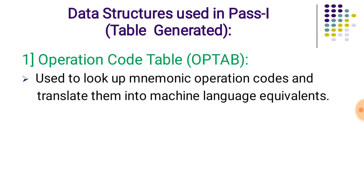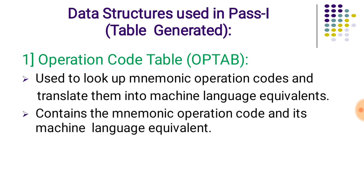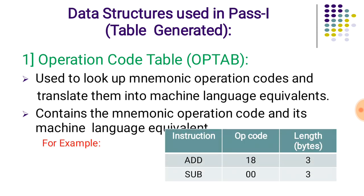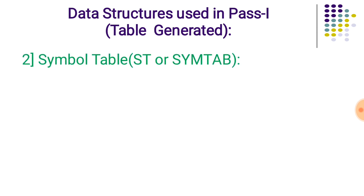Now we will see the data structures used in pass one. The first data structure is the operation code table, which consists of mnemonic operation codes for three kinds of mnemonic statements: imperative statements, assembler directive statements, and declaration statements, along with their opcodes. It consists of three fields: instruction opcode and length — length is usually written in bytes, such as one word or two words.